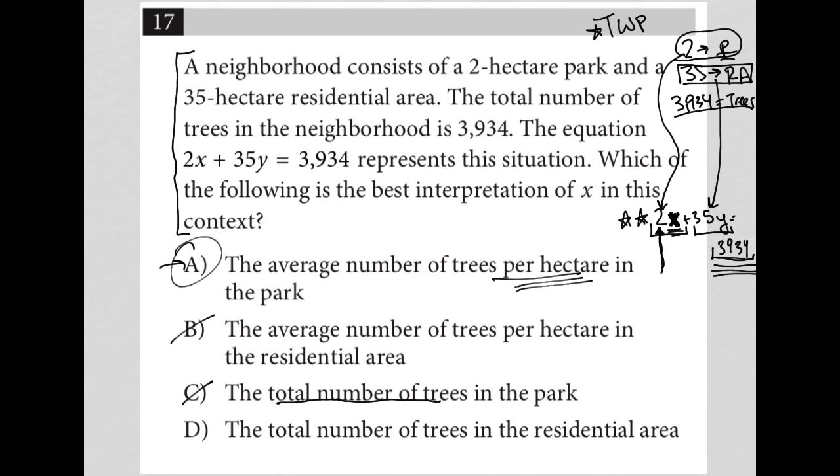So A is looking much better. D looks like it involves residential area, so that's automatically wrong. Choice A is the best answer here.